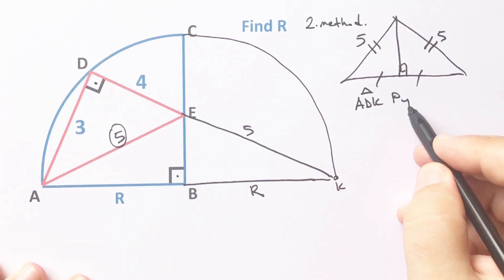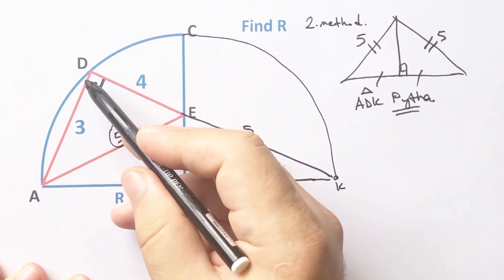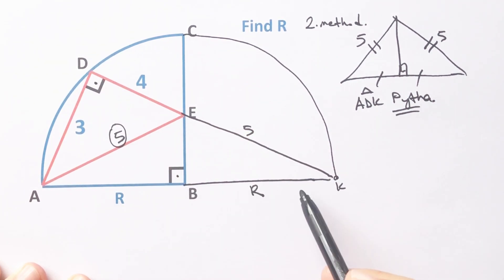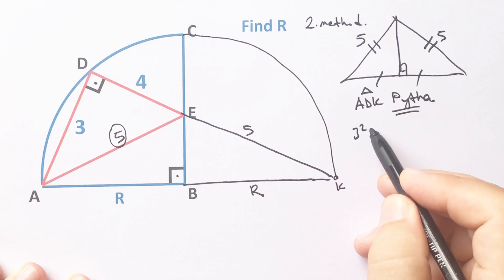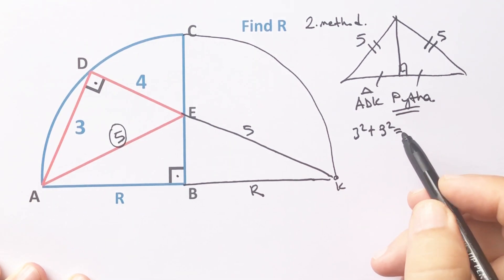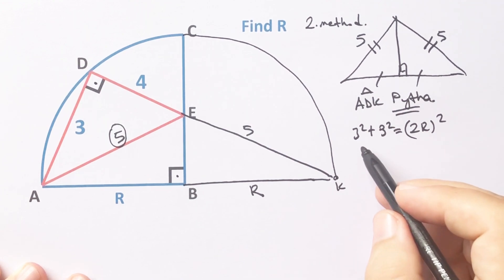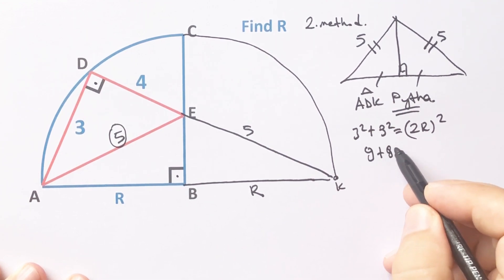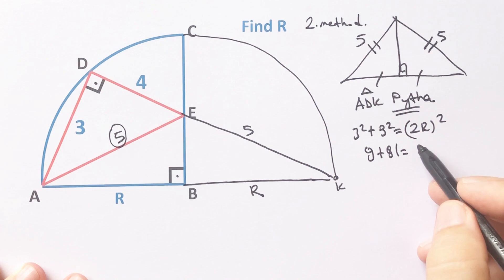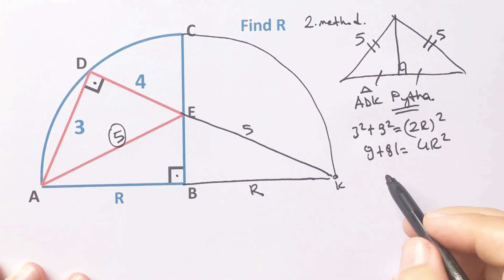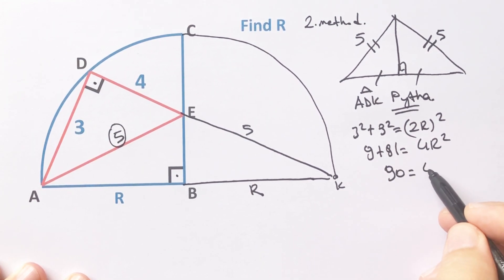For ADK triangle, if we apply Pythagorean theorem, 3 squared plus 9 squared equals R whole squared. 9 plus 81 equals 4R squared. So 90 equals 4R squared.